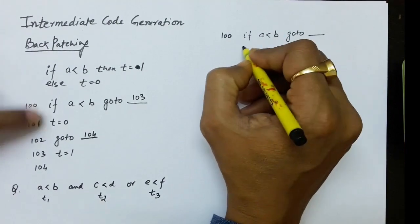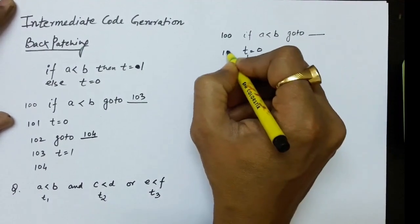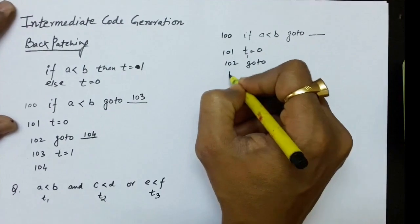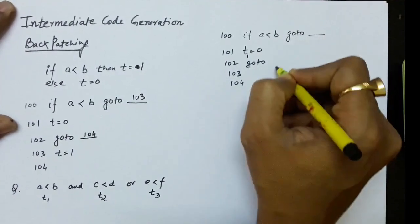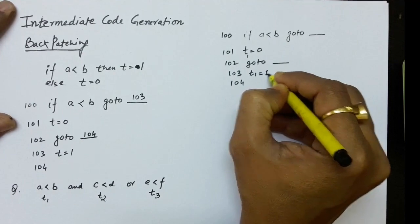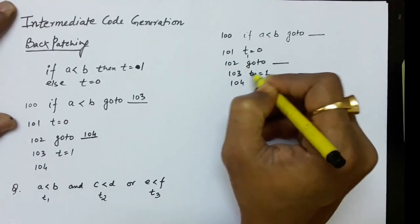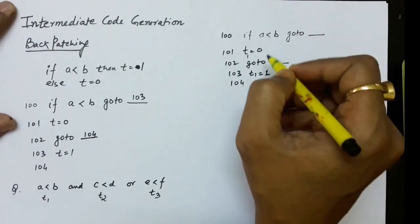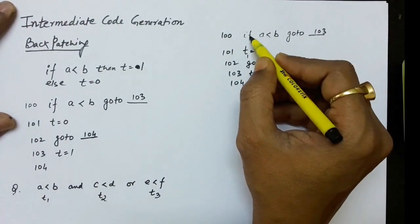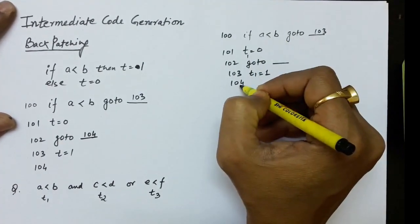We write the false part first: at label 101, t1 equals 0, then the unconditional jump (label blank). At label 103, t1 equals 1, and label 104 follows. If a<b is true we go to 103 to set t1=1; if false we fall to 101 setting t1=0, then the unconditional jump brings us to 104. Backpatching fills in label 103 and 104 accordingly.